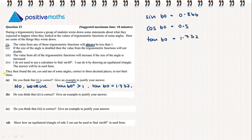Part B: do you think statement 2 is correct? Again, we have to give an example to justify our answer. Statement 2 says: if the size of the angle is doubled, then the value from the trigonometric functions will not double. We already found sine, cosine and tan of 60 degrees, so now let's find the sine, cosine and tan of 30 degrees and compare.